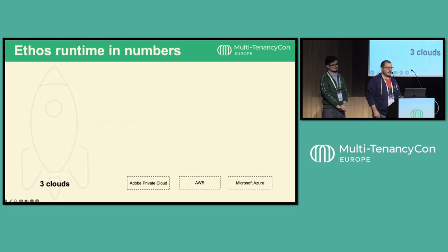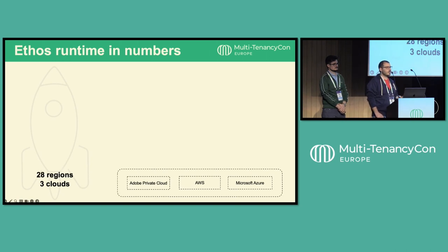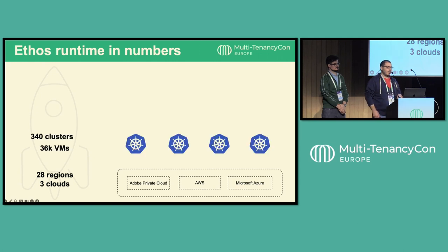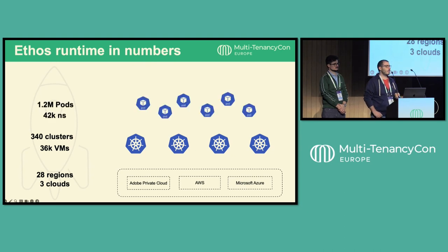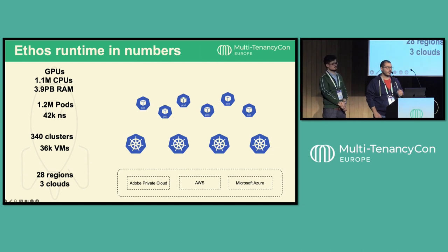To better understand the scale, here are some impressive numbers. Ethos operates across three main cloud providers — Adobe Private Cloud, AWS, and Azure — spanning 28 different cloud regions, and we are managing more than 340 Kubernetes clusters, hosting more than one million pods running in 42,000 Kubernetes namespaces owned by application development teams. In terms of computing power, the platform consumes about 3.9 petabytes of RAM, more than one million virtual CPUs, and tens of thousands of GPUs for AI workloads.